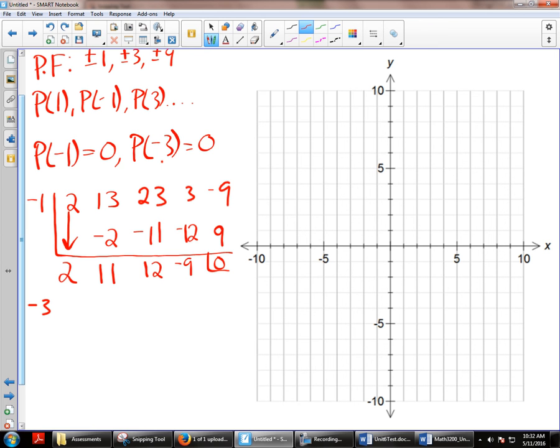So I'll do negative 3 this time. And my pen just keeps changing on me for some reason. So I have 2, 11, 12, negative 9. Last one we got that little box. Drag the 2 down. Let's try it again this time, no mistakes. Negative 3 times 2, negative 6. Add 5. So that's negative 15. Add, that gives me negative 3. Negative 3 times negative 3 is 9 and 0.